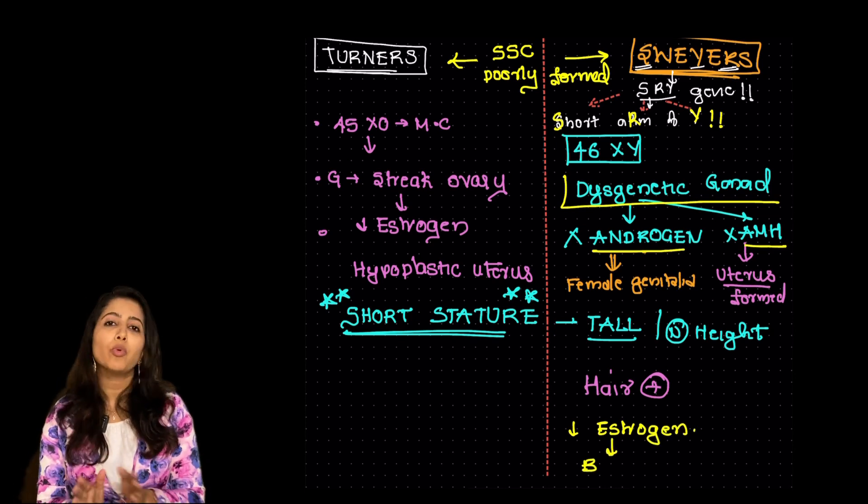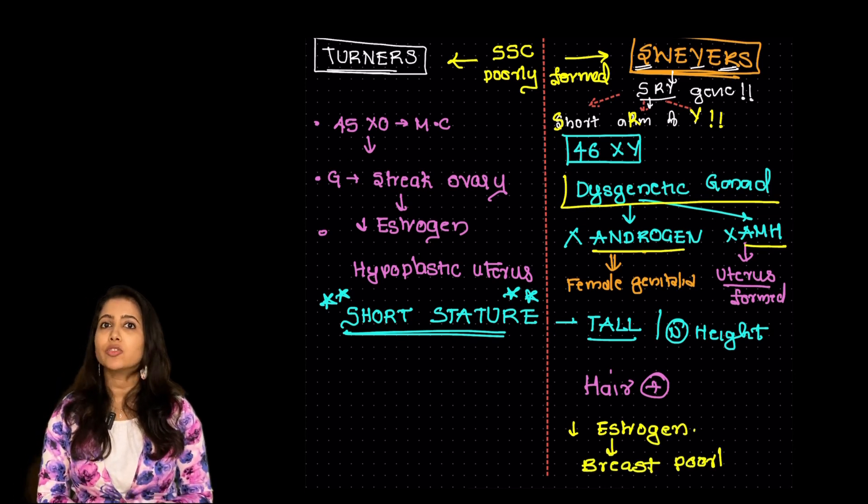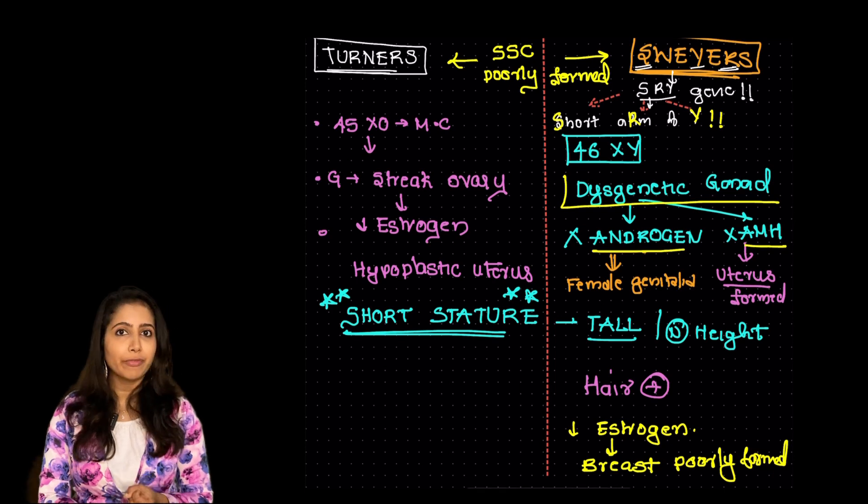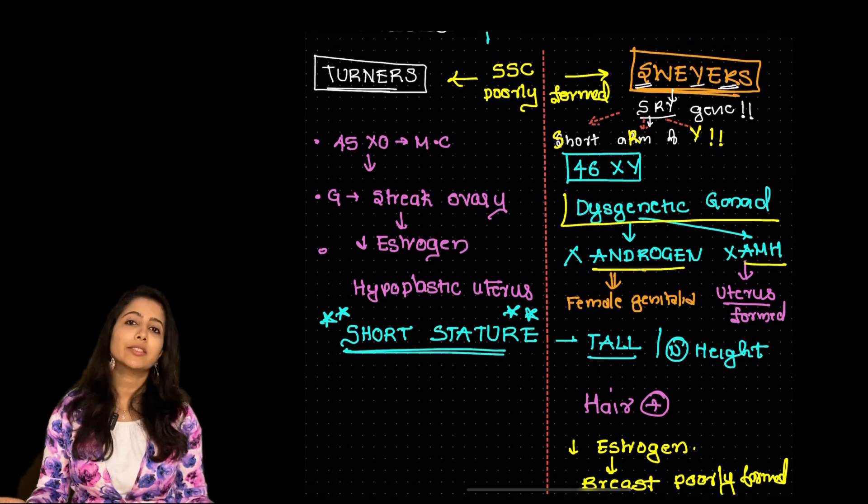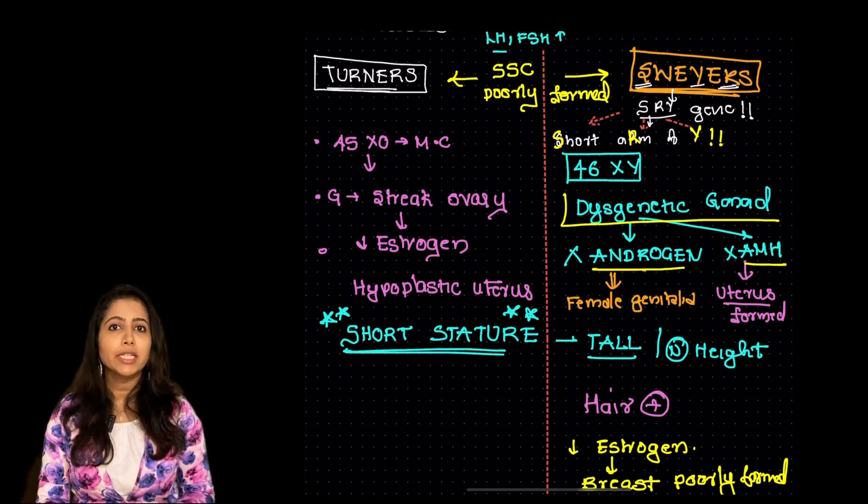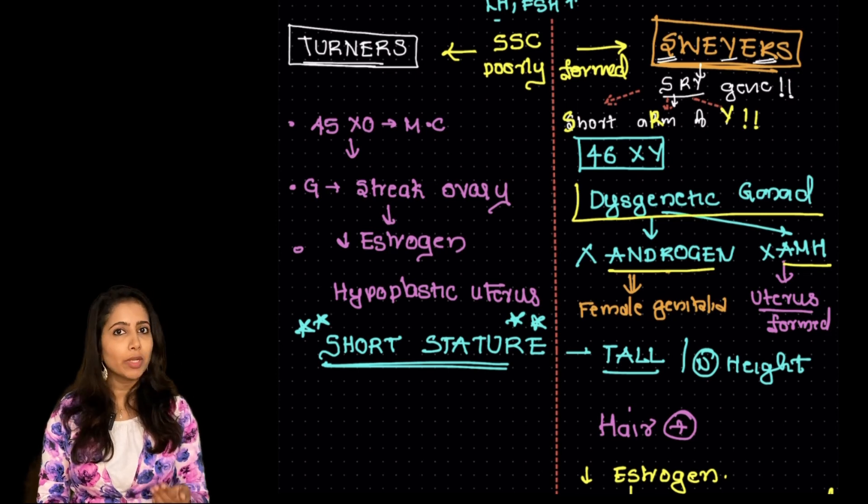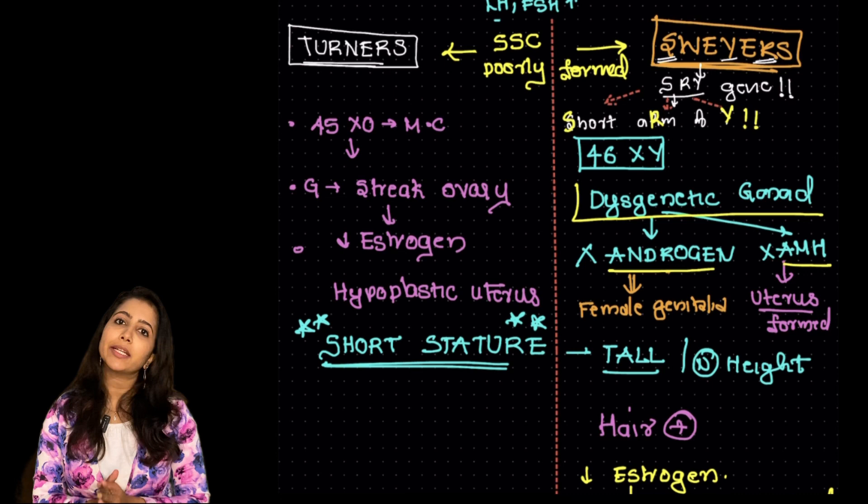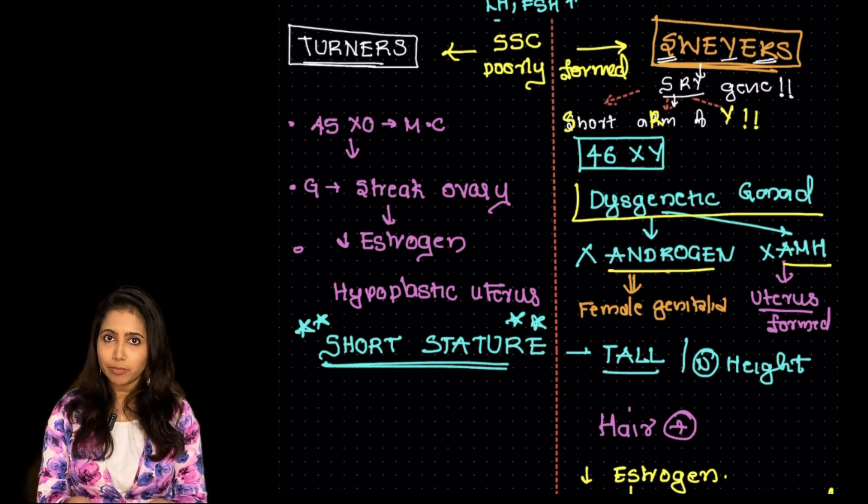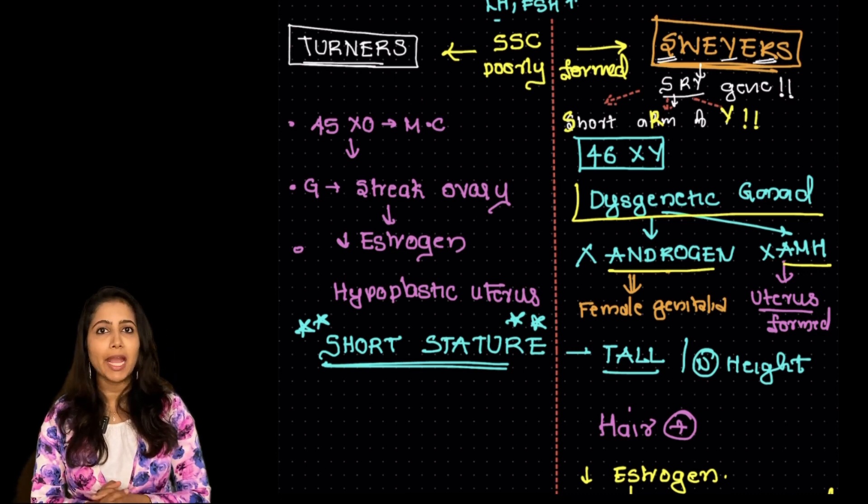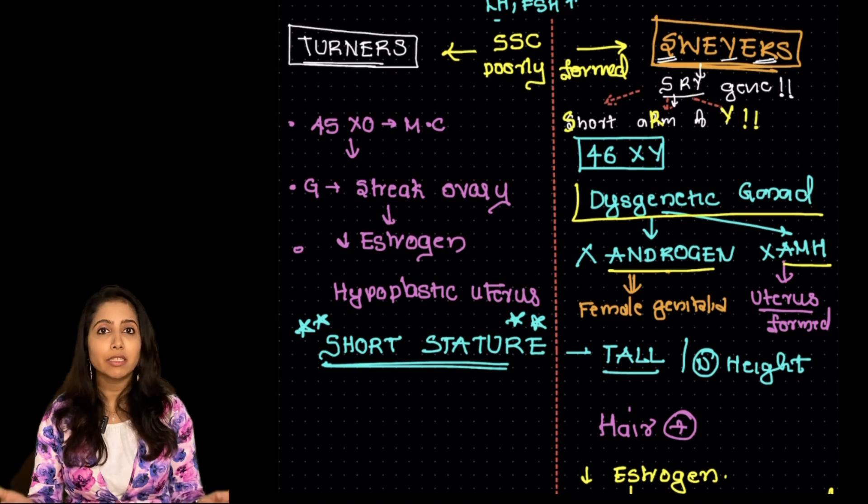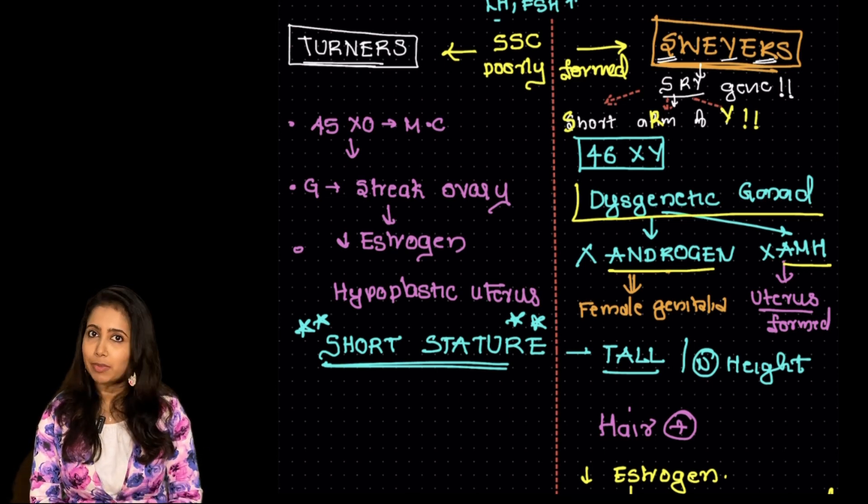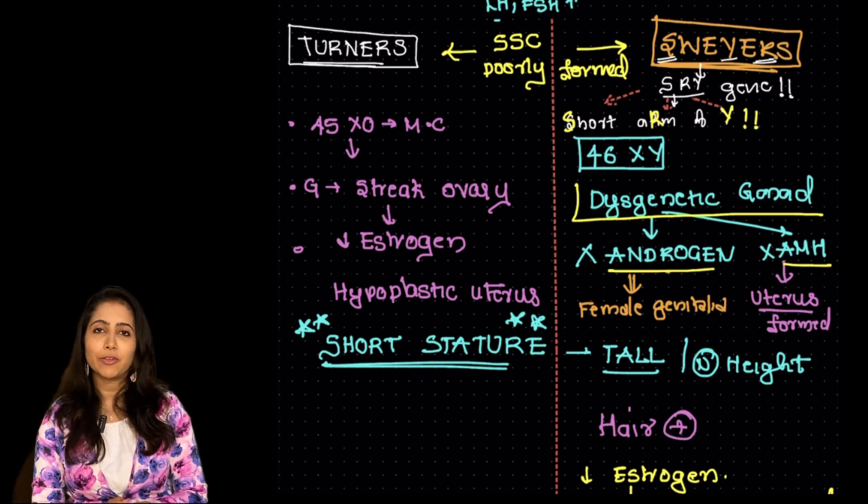So the breast is poorly developed in this woman. The level of LH and FSH is going to be high as the gonads are not working properly. The level of estrogen as well as the androgens is low in this. Regarding the secondary sexual characters, the breast is poorly developed, there is development of axillary as well as pubic hair. The external genitalia is that of a female and the karyotype is that of a male.